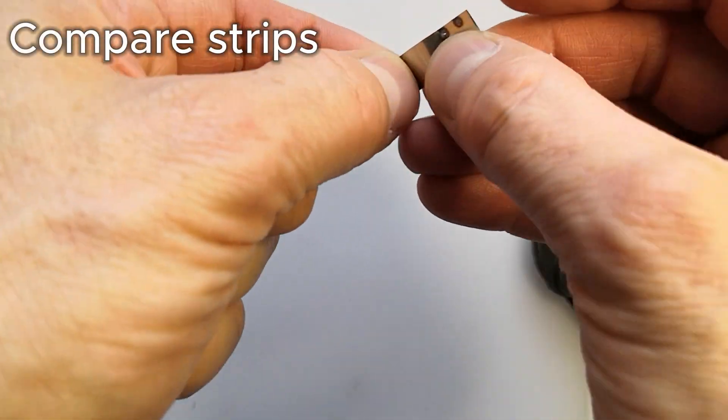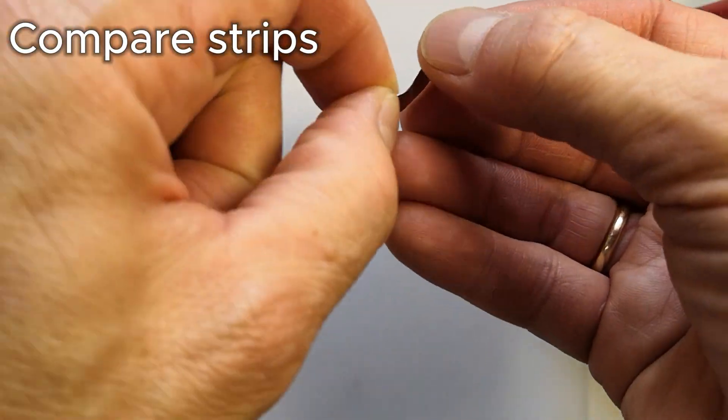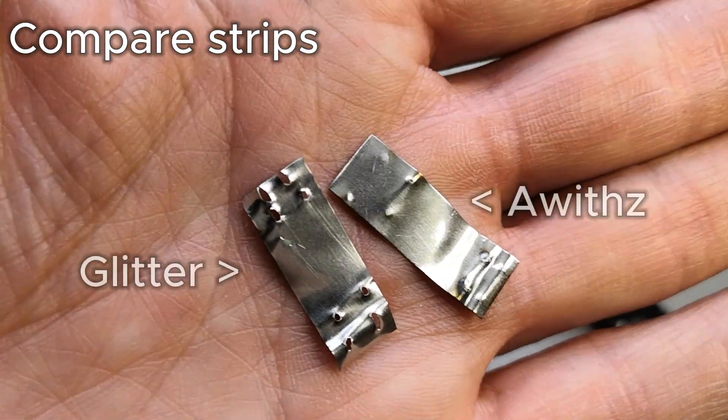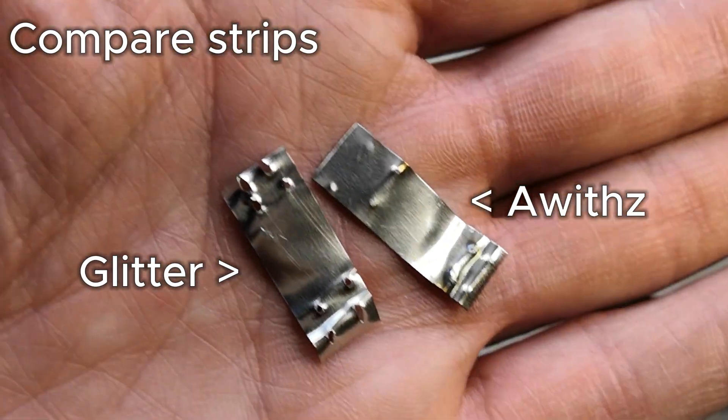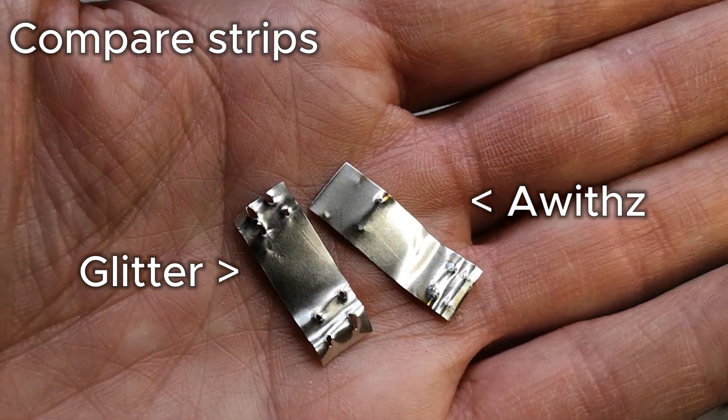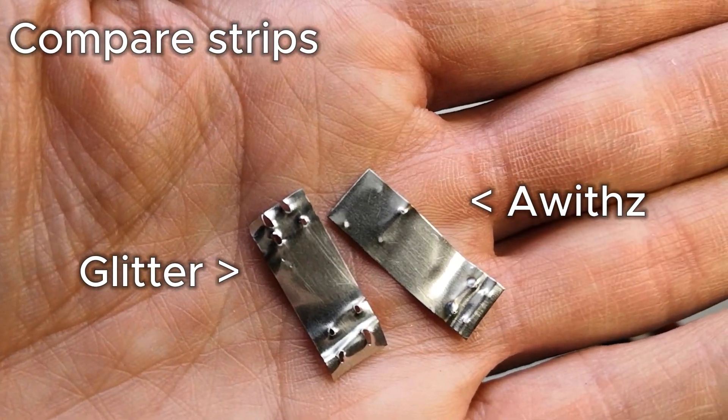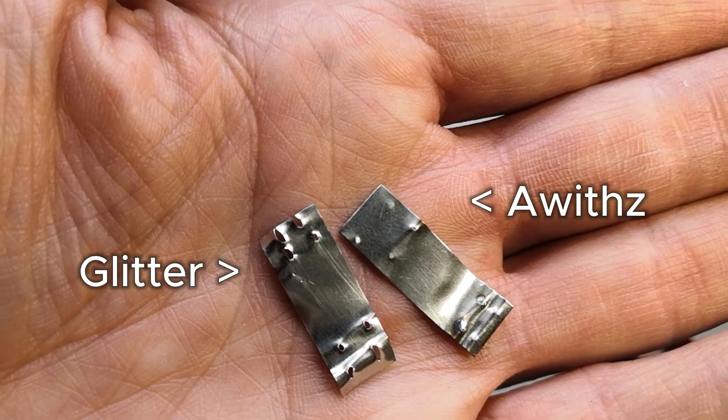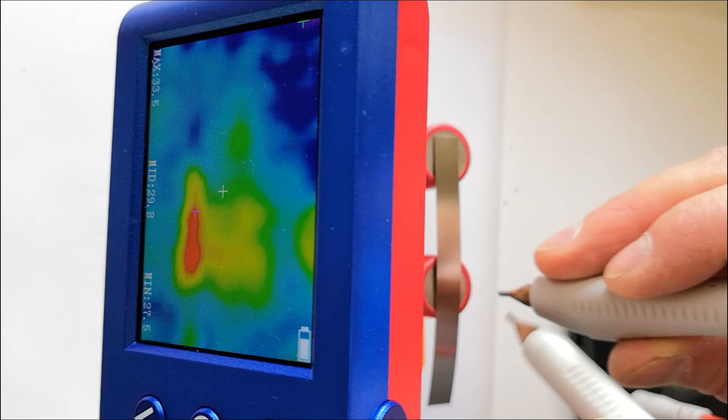Let's compare the pulled off strips. The one welded with Glitter has holes, indicating strong welds. The Avis strip only shows small bumps. Glitter clearly provides better contact and bonding.